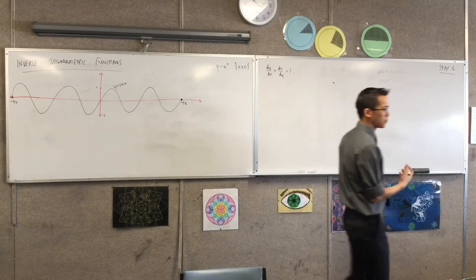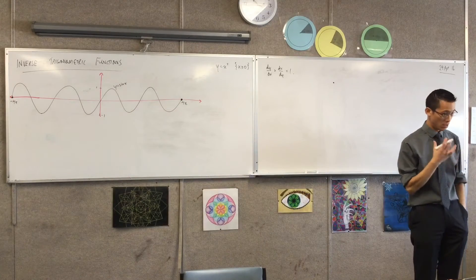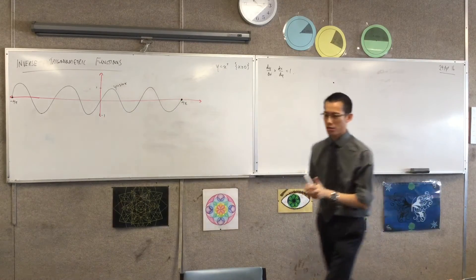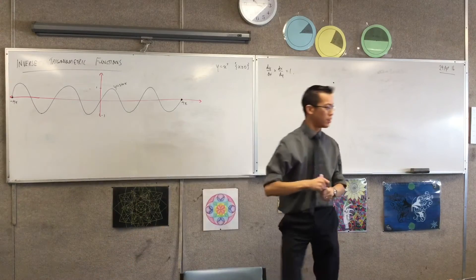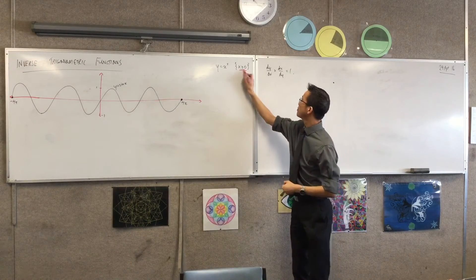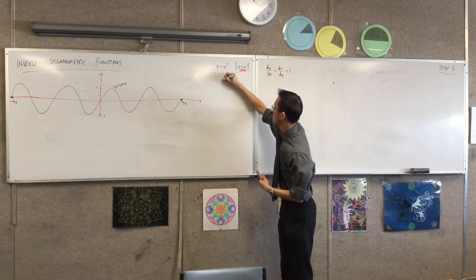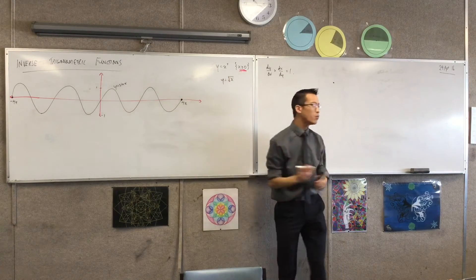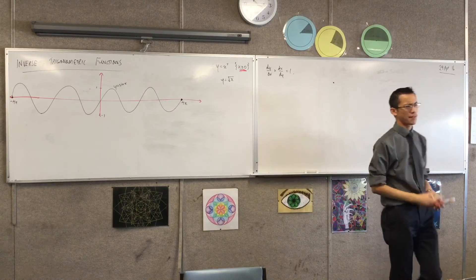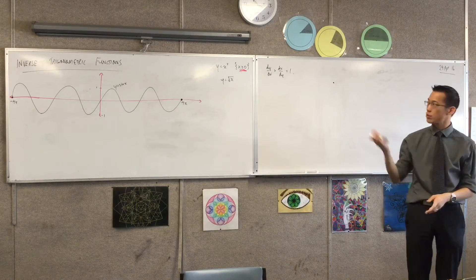I'm clearly going to have to do something similar. I'm going to have to restrict domain okay. Now question, when we restricted the domain of this guy, right, in order to define its inverse the square root of x, why did we choose this part of the graph? Because we didn't have to. Why did we choose x is greater than zero?